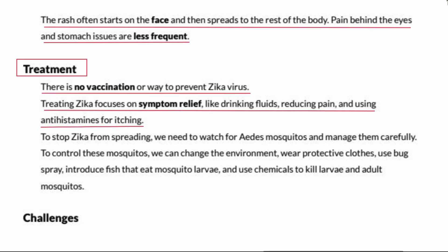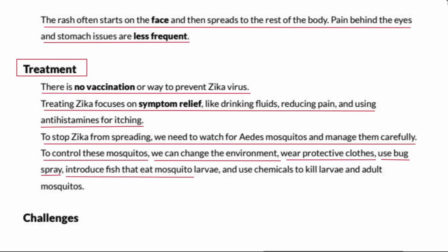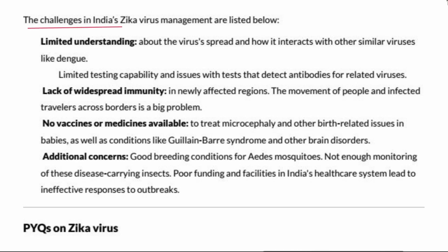To stop Zika from spreading, we need to monitor Aedes aegypti mosquitoes and manage them carefully. To control this mosquito, we can modify the environment, wear protective clothing, use bug spray, introduce fish that eat mosquito larvae, and use chemicals to kill larvae and adult mosquitoes.